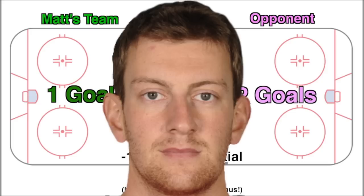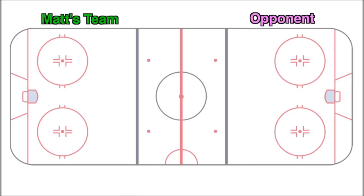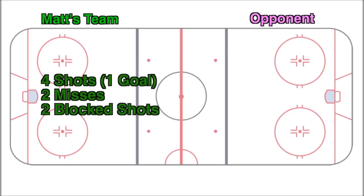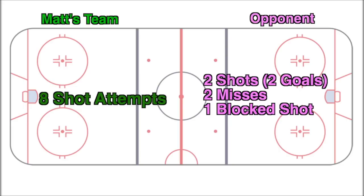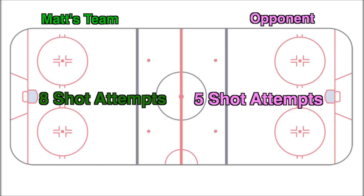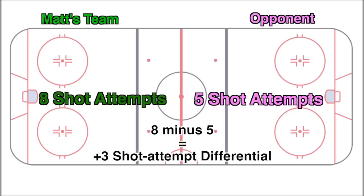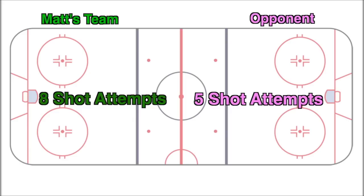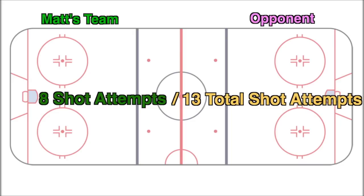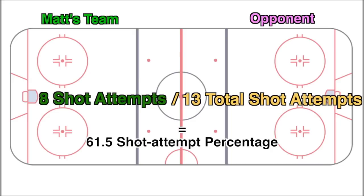And for no particular reason, here's a picture of Jeff Schultz. But if we count all the shot attempts while Matt was on the ice, we have a better understanding of where he spent his time and how he was doing. When Matt was on the ice, his team had four shots, two misses, and two blocks, and the other team had two shots, two misses, and one block. That's eight shot attempts for the green team and five shot attempts for the pink team. So if Matt's team had eight shot attempts while he was on the ice out of a grand total of 13 shot attempts while he was on the ice, that gives his team 61.5% of the shot attempts.